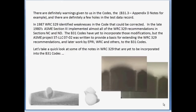In 1987, WRC 329 identified many of these weaknesses in Section 3 and the B31 codes. In the late 1980s and early 1990s, ASME Section 3 implemented most of the WRC 329 recommendations in NC and ND. The B31 codes, however, have yet to incorporate those modifications. The ASME project STLLC 0702 was written to provide a basis for implementing the WRC 329 recommendations and later work by EPRI, WRC, and others in the B31 codes. Let's take a quick look at some of the notes in WRC 329 that are yet to be incorporated into the B31 codes and where FEA tools might be of use now.